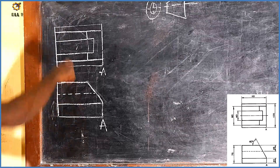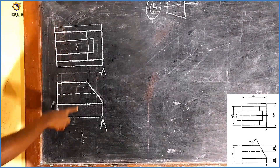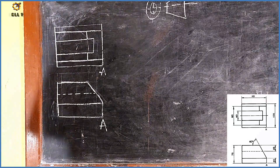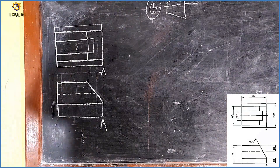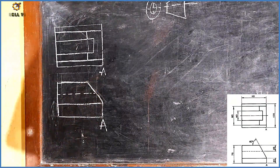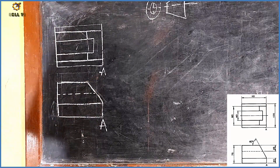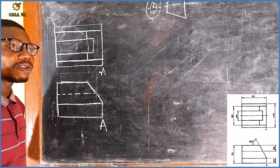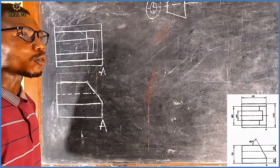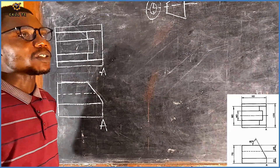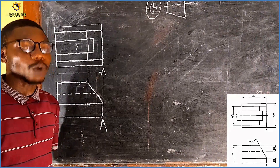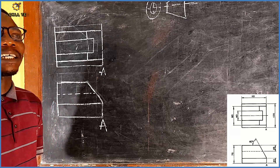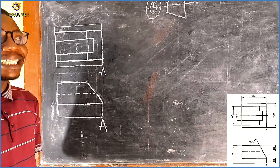At the top I have my plan and underneath I have my elevation. We are told to make mark A as our lowest point. If you haven't been following this series from part 1, I implore you to go back to our page and start watching from part 1 so that you can actually understand the concept in depth.